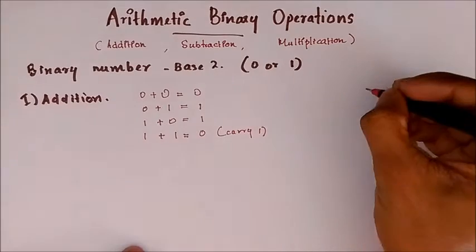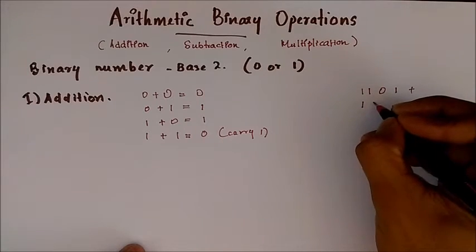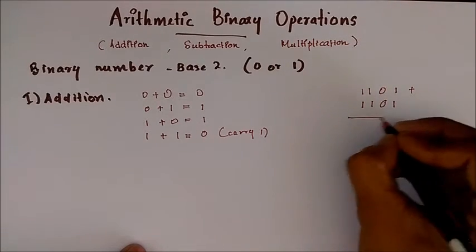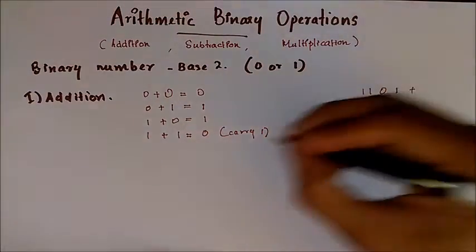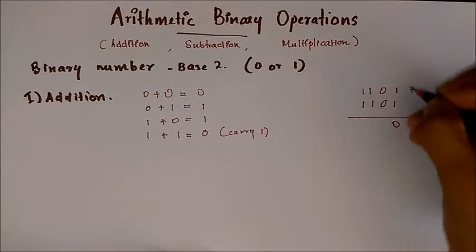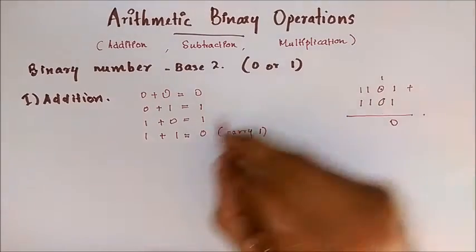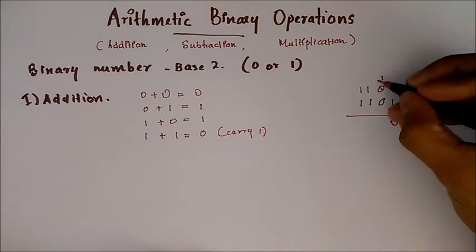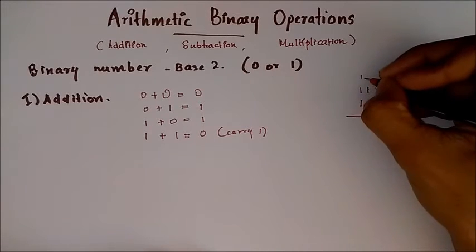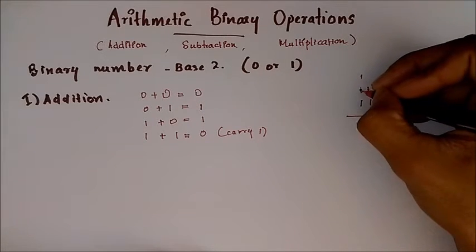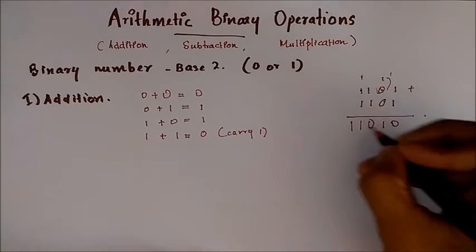So consider these two numbers. We have to add 1101 to the same number 1101. For addition, we consider this table. First of all it is 1 plus 1 which gives 0 with a carry. Here there comes a carry 1. Now we have to add 1 plus 0 which is 1. Again this becomes 1 plus 0, we get 1. Now 1 plus 1 which is 0 with a carry 1. And 1 plus 1 again is 0 with a carry 1.